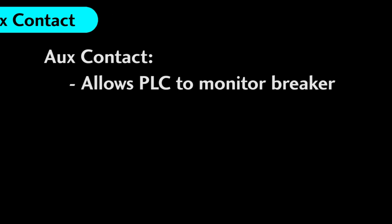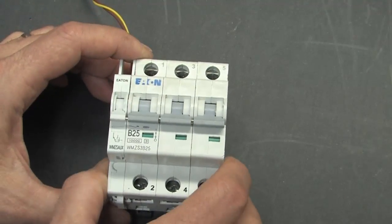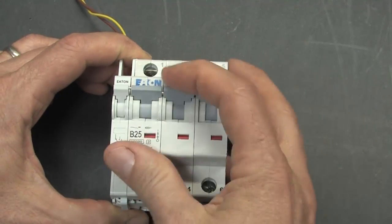An AUX contact gives the PLC a way to monitor the status of the breaker. Here is an example of an MCB AUX contact. It just clips on here so when the breaker trips, this contact closes.